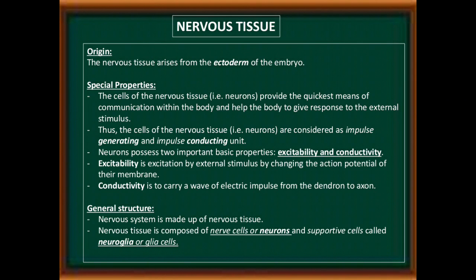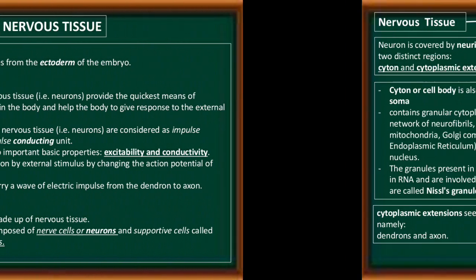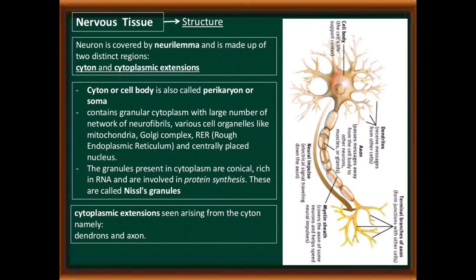General structure: the nervous system is made up of nervous tissue. Nervous tissue is composed of nerve cells, that is neurons, and supportive cells called neuroglia or glial cells. Nervous tissue structure: the neuron is covered by neurolema and is made up of two distinct regions — the cytone and cytoplasmic extensions, that is the axon.